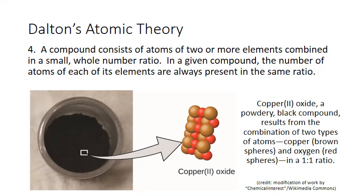This is a powdery black substance made up of the elements copper and oxygen. When broken down into those elements, it's found that they are always present in the same ratio. In terms of atoms, this is one copper atom for every one oxygen atom.